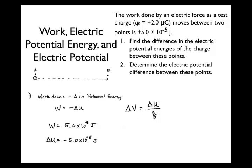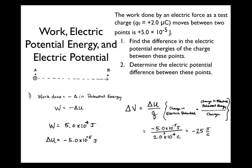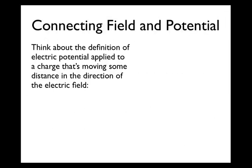For the electric potential difference between the two points: ΔV = ΔU / q = (−5 × 10⁻⁵ J) / (2 × 10⁻⁶ C) = −25 joules per coulomb, or −25 volts. That means the potential difference between A and B is 25 volts, and moving from A to B you decrease in electric potential by that amount. We'll see this concept much more in the circuits unit.